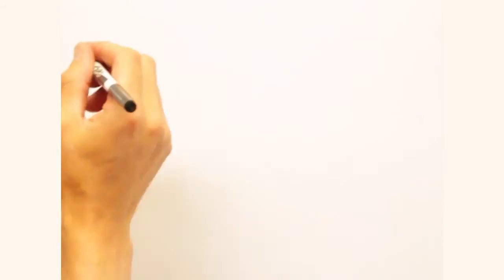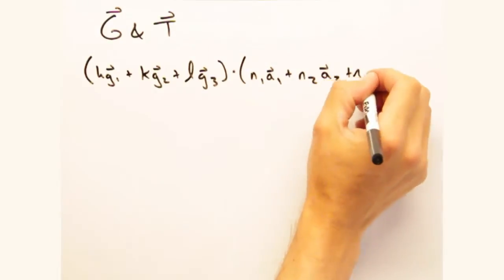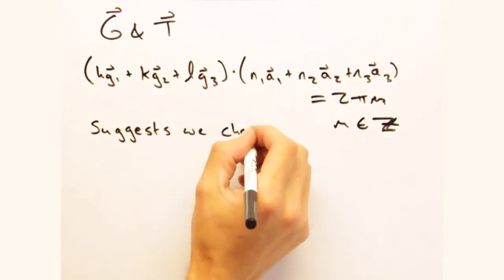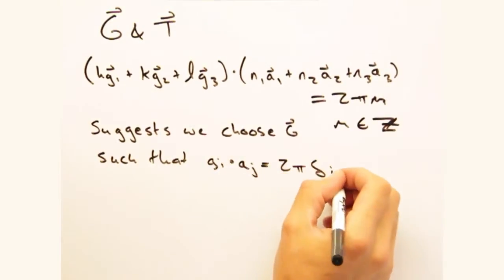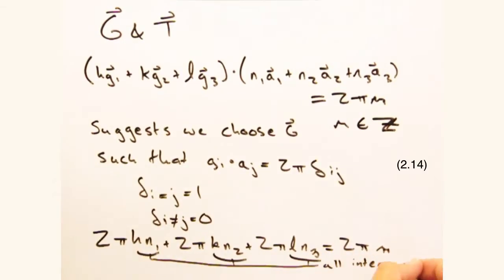So now that we have an expression for g and t, we can sub both into the dot product constraint we had before. And this suggests we choose our g vectors, such that g sub i dotted with a sub j is two pi times the Kronecker delta, where it equals one when i equals j, and zero otherwise. Plugging this into our expression above, we see that every term is two pi times some integer.